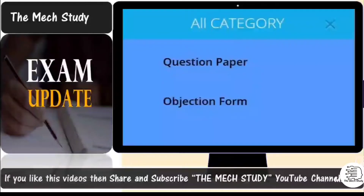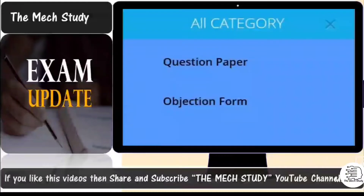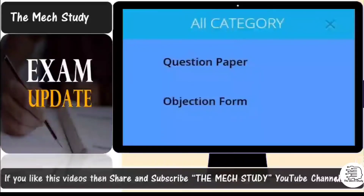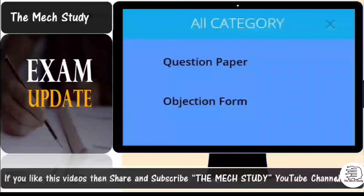Read all the questions you attempted and check whether your answers are correct. If you think the question you attempted is right but the answer they provided is wrong, you need to create an objection form for that and pay a certain amount. Once you have raised the objection and they find that the answer they provided is wrong, your objection form fee will be refunded and you will get the exact marks allotted to that particular question.